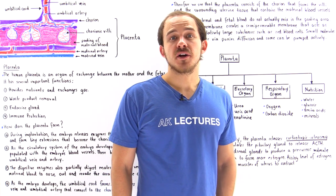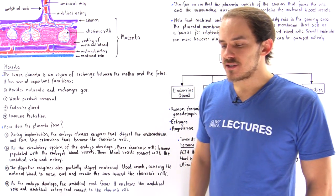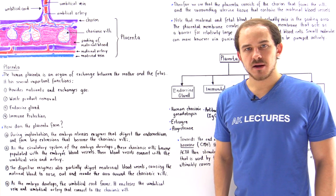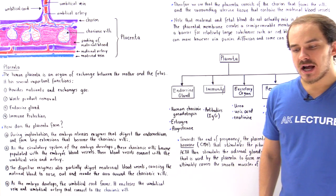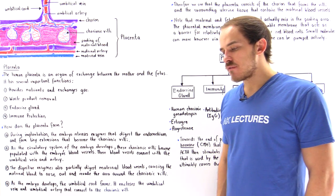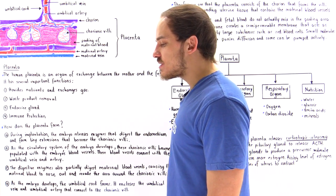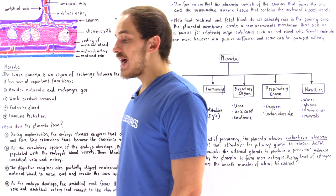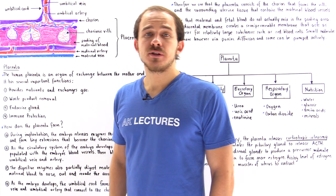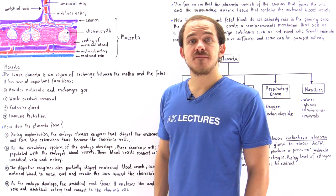The placenta is a very important organ that exists during the development process of the embryo. Now there are many important functions of the placenta, but before we discuss the functionality of the placenta, let's actually focus on how the placenta is developed.